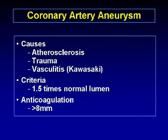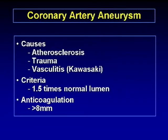Coronary artery aneurysm is usually caused by atherosclerotic disease, but a very common cause is also traumatic or iatrogenic aneurysms, as seen in this case. Patients with some types of vasculitis can also present — particularly Kawasaki disease can present with coronary artery aneurysm. The diagnostic criteria is a diameter larger than 1.5 times the size of the normal lumen. It's very important to get a precise measurement of that aneurysm, because clinicians will decide if the patient needs to be anticoagulated. Eight millimeters is the threshold for anticoagulation.